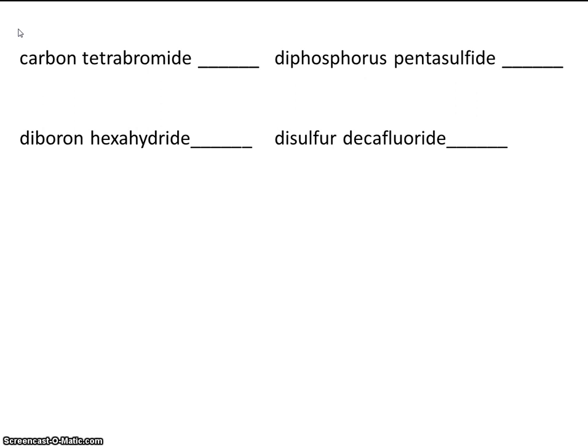So if you see a metal, you know right away you're dealing with an ionic compound. And since there are no metals here, you know you're dealing with covalent bonds.